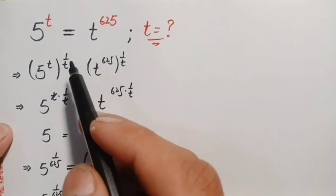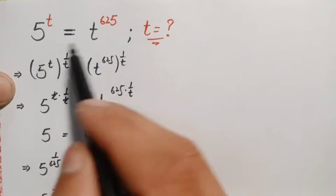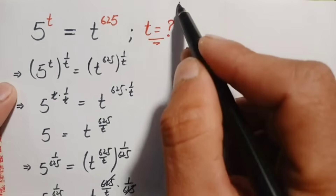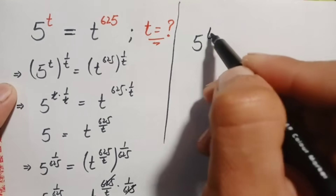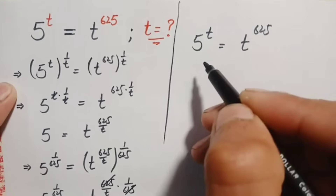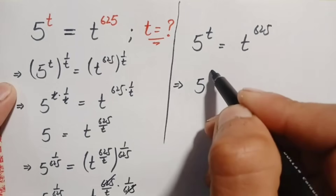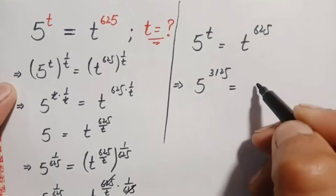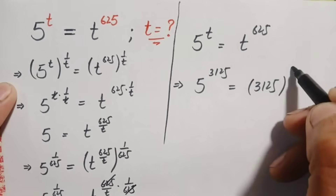Now we will verify this value of t. We substitute back into the original problem: 5 raised to power t equals t raised to power 625. Substituting t equals 3,125, this becomes 5 raised to power 3,125 is equal to 3,125 raised to power 625. Now we will try to make both sides the same. We change the base 3,125 into its exponential form: 3,125 equals 5 raised to power 5.